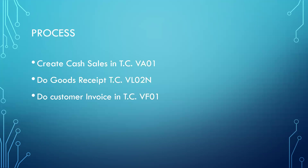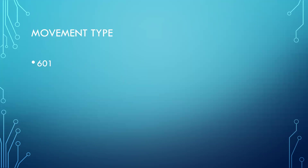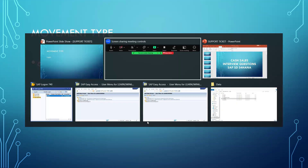Next they may ask: what is the movement type? The movement type is 601 — that is the normal standard movement type. They may also ask where you find the movement type in the sales order. You go to the item data, that is material-related data, double-click onto material-related data, go to the schedule lines tab, double-click on the schedule line, and go to procurement — you can find the movement type there.